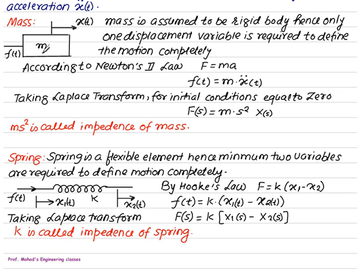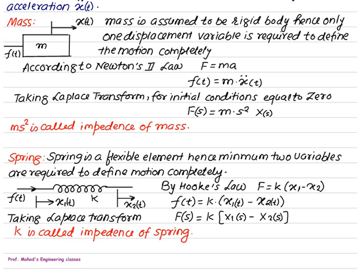So we have two elements: mass with impedance ms² and spring with impedance k. Another useful component is a damper or dashpot, which consists of a cylinder and piston arrangement filled with oil. The damper is also a flexible element, so it requires two variables to define the motion. The force f(t), and displacements x1(t) and x2(t).